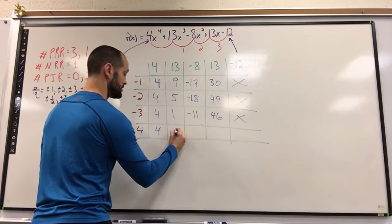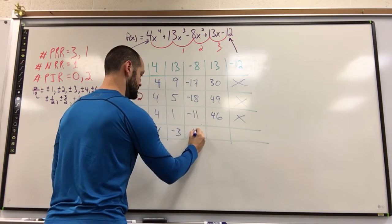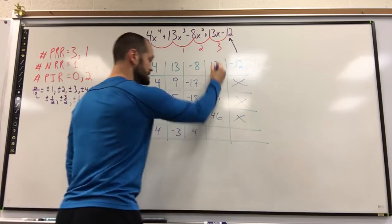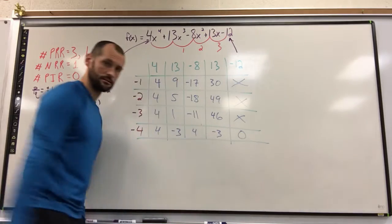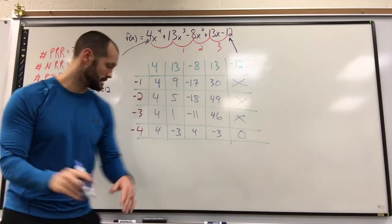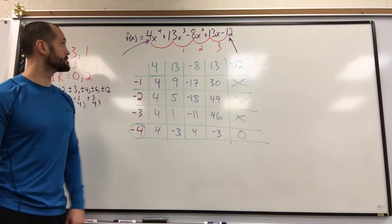4, negative 16, we get a negative 3. Staying low, good. Positive 12, we're up to 4. Negative 16. Oh shoot! I see some goods. Nailed it. Okay, so what does that tell me? Negative 4 is one of my roots.